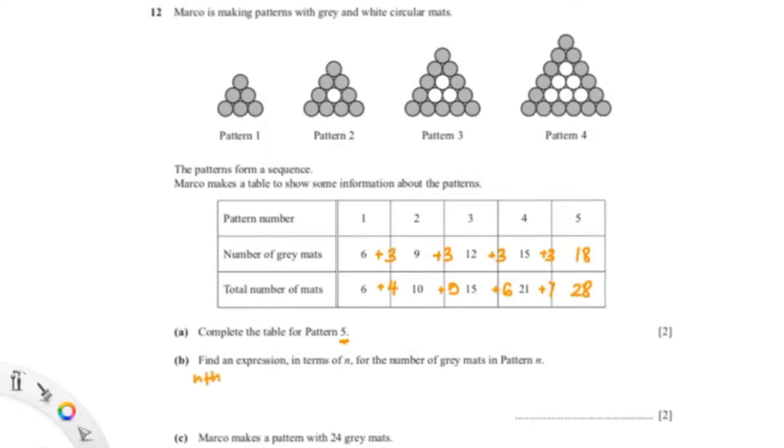And for our next question, they're asking us to find the n-term. The formula for finding n-term is a1 plus n minus 1 times d. We use this formula because it is an arithmetic sequence. So now we can just put in our values. A is the first pattern and d is the common difference, so that would be 6 plus n minus 1, and our common difference is 3.